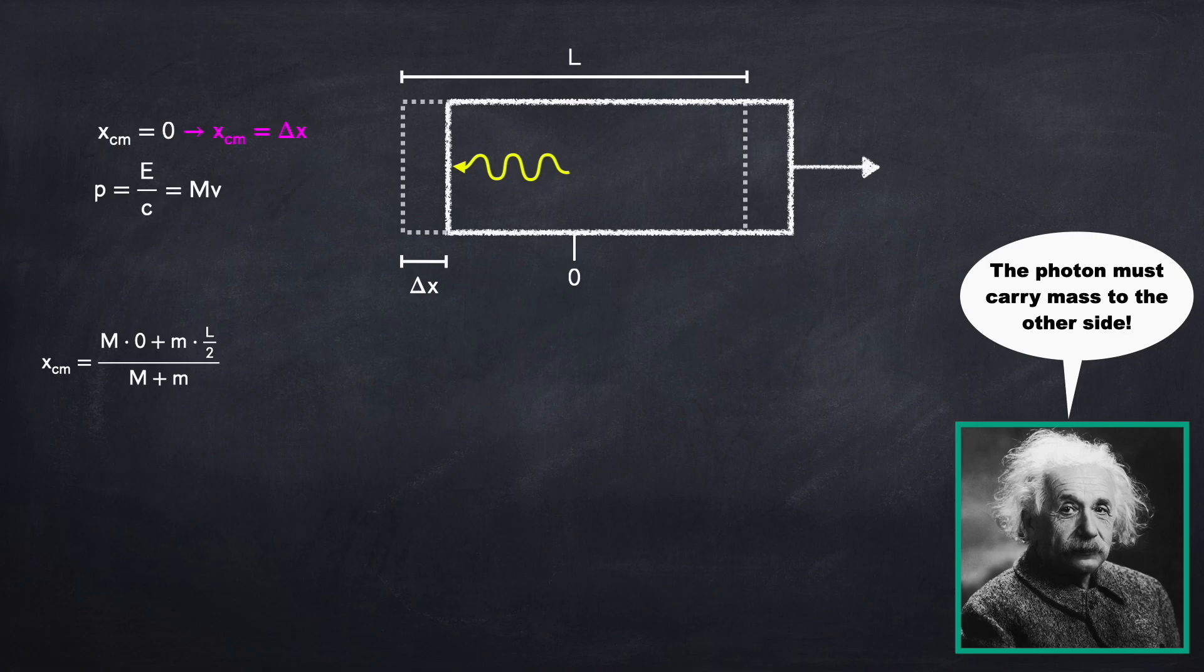And we're going to call the right positive. Then we have to divide by the total mass of the system, which is capital M plus little m. Now this center of mass of the box photon system has to remain unchanged. So after the photon has been emitted and absorbed by the other side of the box, the new center of mass must be equal to the original center of mass.